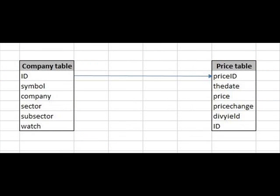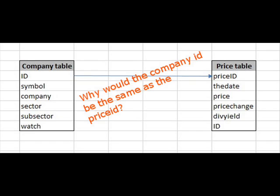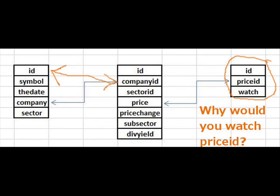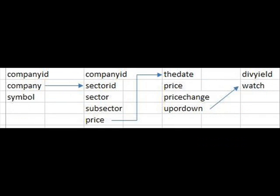Here we see two tables. But what's wrong with that? Well, company ID would be the same as the price ID — you can't link them together. Next: why would you watch price ID? I don't see how those are tied together. And the ID, of course, belongs to company ID.